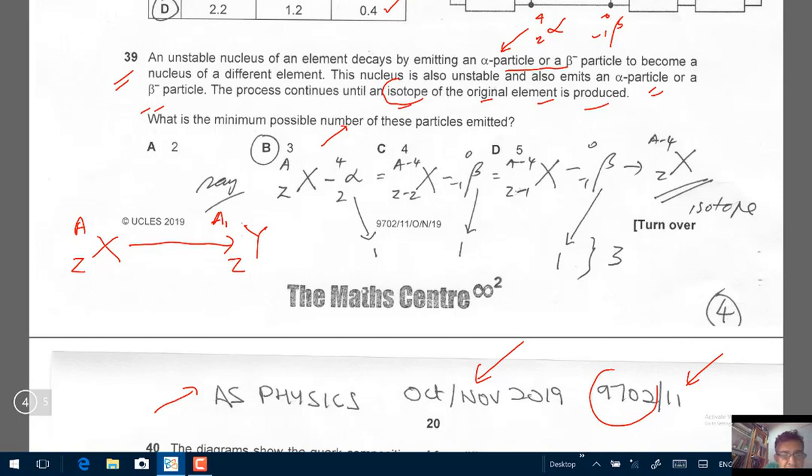Which means that, let X be the number of alpha particles emitted, and let Y be the number of beta negative particles emitted. We are looking at this number here is going to remain unchanged, and be careful, these are emitted.